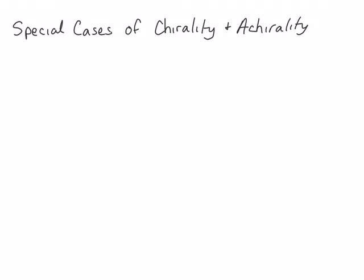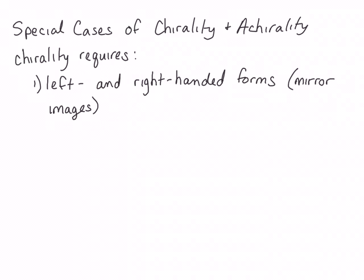The topic of this lecture will be some special cases of both chiral and achiral molecules. For this lecture, it's important to remember what makes a molecule chiral. Chirality requires two things: first, there must be left and right-handed forms of something — those are mirror images of one another. Secondly, chirality requires that these left and right-handed forms are non-superimposable. They can't be the same. Remembering these two requirements is important for the following discussion.